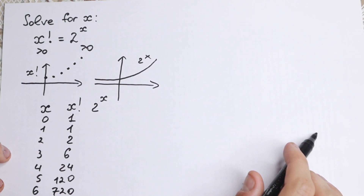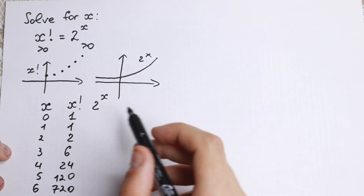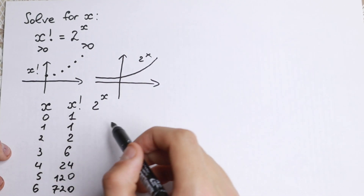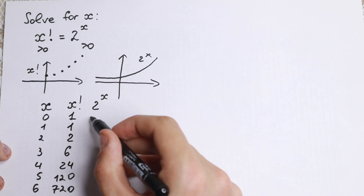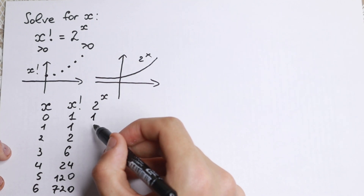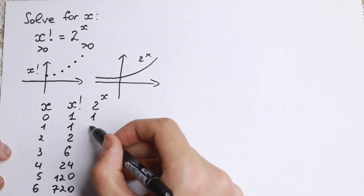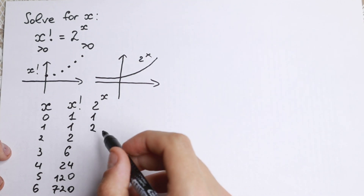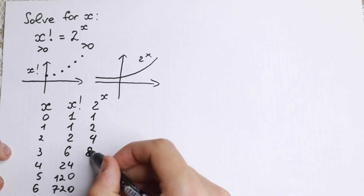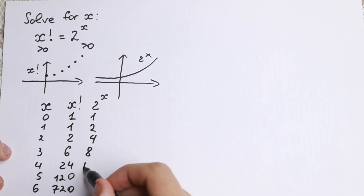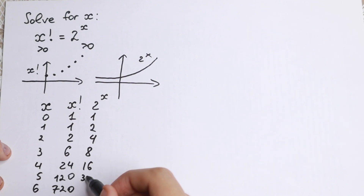On the right-hand side we have 2 to the x. 2 to the 0 is 1, 2 to the 1 is 2, 2 squared is 4, then 8, 16, 32, and 64.